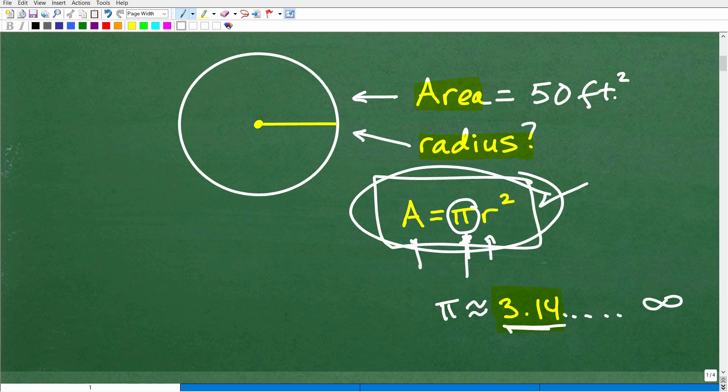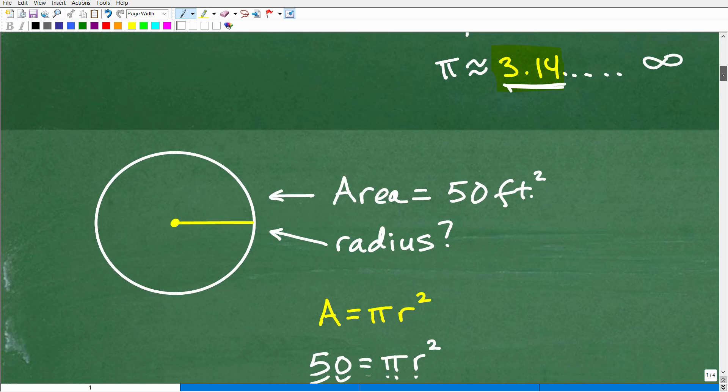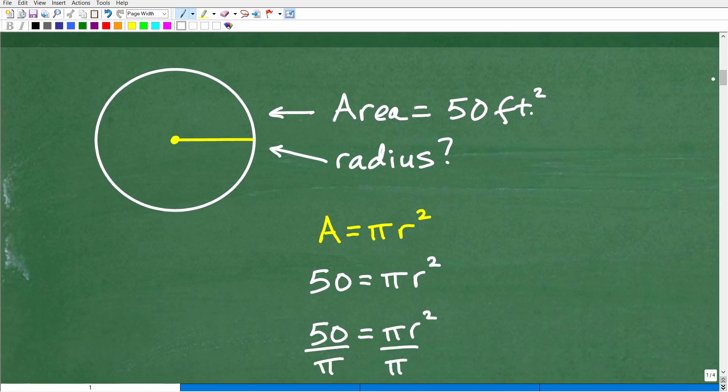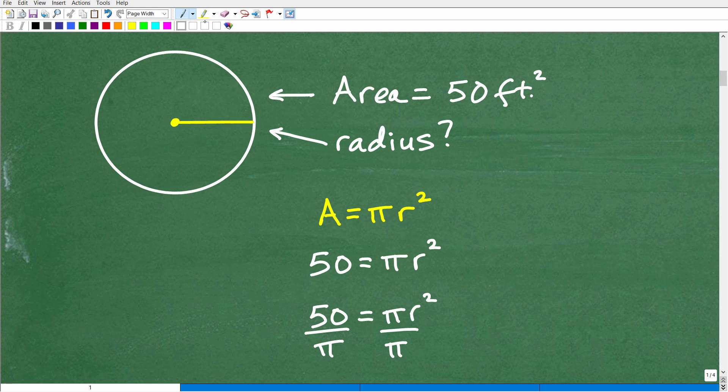So if you want to go ahead and do this problem, you can use 3.14 as your approximation for pi. And go ahead and use this formula. See if you can go ahead and solve the basic algebra problem that occurs here when we're trying to solve for the radius. But let's go ahead and get into this now. This is not that difficult, but if you didn't know how to do it, now you're going to find out.